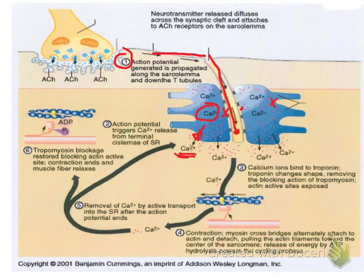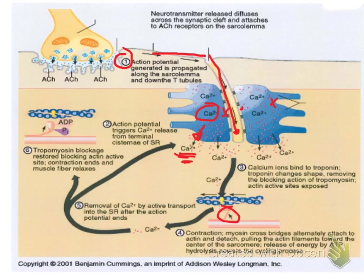Calcium ions are the final thing needed for skeletal muscles to contract. ATP is being generated continuously via the Krebs cycle and attaches to the myosin myofilament, energizing the process to cause sliding filament theory. Calcium is needed because it actually unblocks the myosin binding site on the actin molecule.